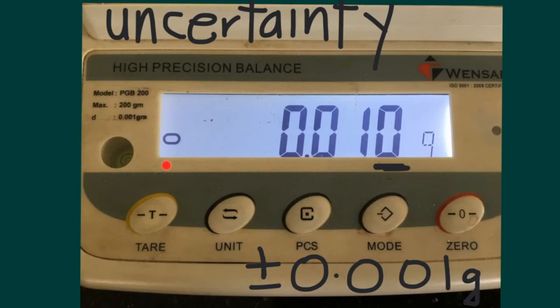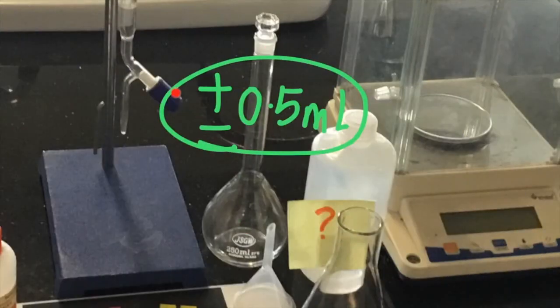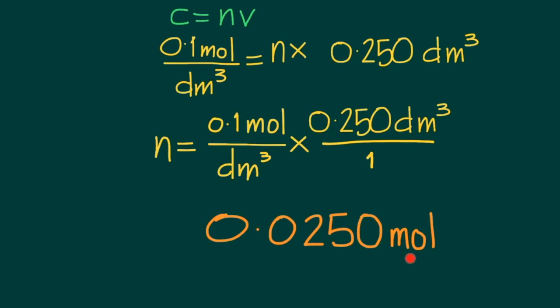The student also had an analytical balance that had an uncertainty of 0.001g. This is stated by the manufacturer, and generally, it's the same as the last digit measured on the device, which is the 1,000th place. The student first determined the number of moles required to make a 0.1 mol per dm³ solution in the 250ml volumetric flask, which has a volume of 0.250 dm³. The calculation showed that 0.025 moles of sodium hydroxide was required.